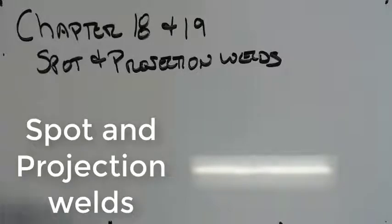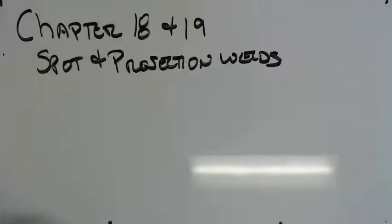Welcome. Today we're going to talk about chapters 18 and 19 of the blueprint book, which are spot and projection welds. These two types of welds are very similar. They have a couple of differences, but they're very similar.